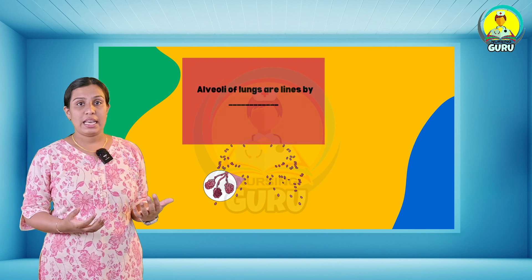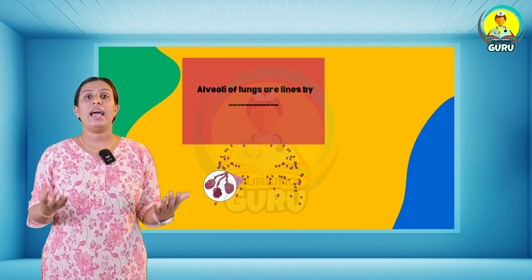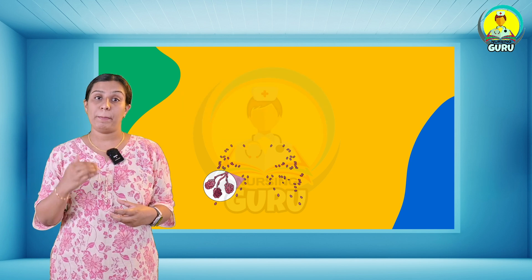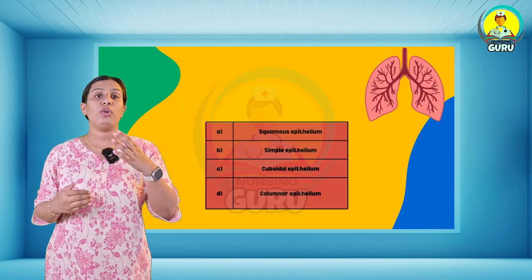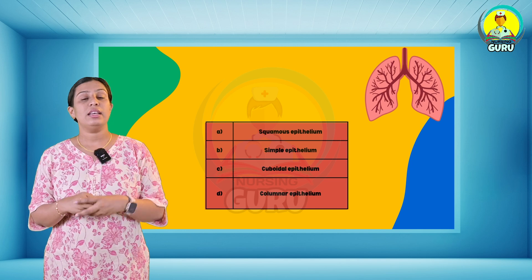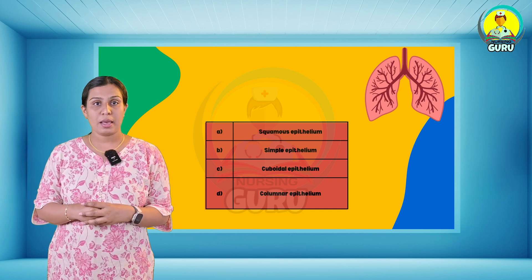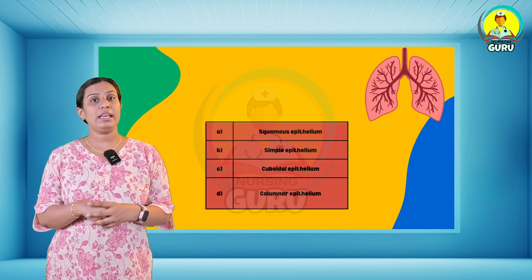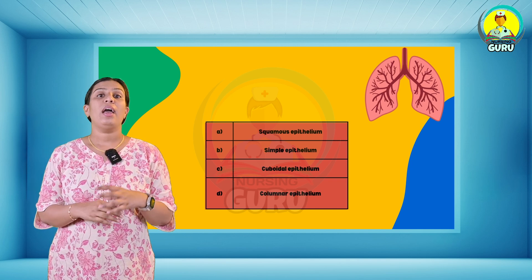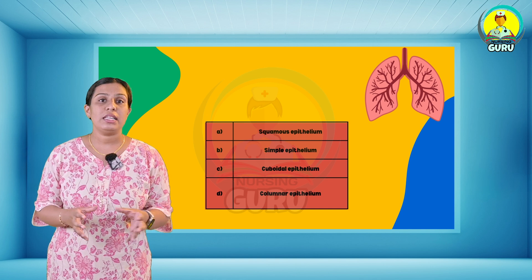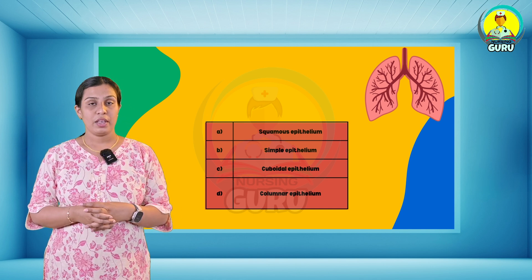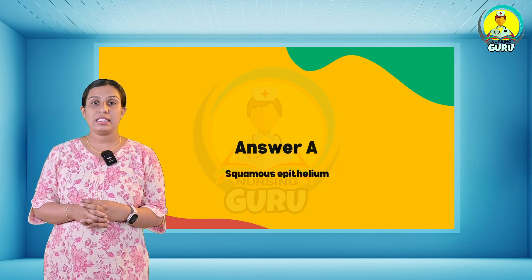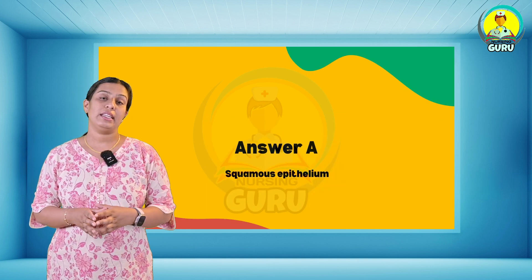Fifth question: alveoli of the lungs are lined by which type of epithelium? Four options: squamous epithelium, simple epithelium, cuboidal epithelium, and columnar epithelium. The answer is option A — squamous epithelium.